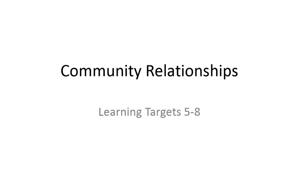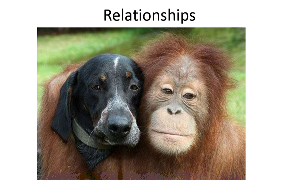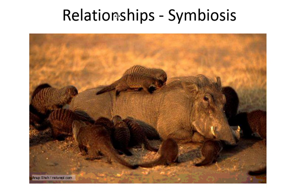This video is on community relationships, learning targets 5 through 8 in the ecology unit. We're going to be looking at different relationships within the living things of an ecosystem. Here's an example of a relationship that's not going to happen in nature — you can see the dog is terrified for his life. Monkeys are savages. There are different types of relationships, and we're going to look at three main big heading types of relationships and then some underneath those.